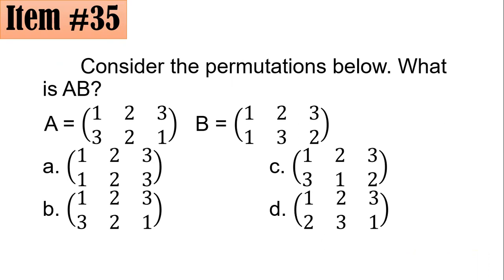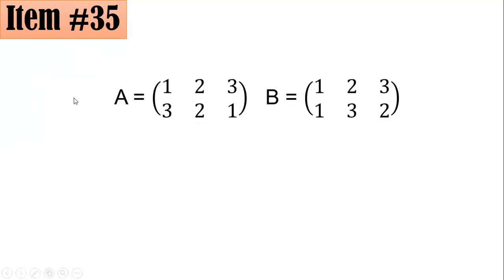So I have here 1, 2, 3 on top, and 3, 2, 1 at the bottom for A. This means 1 is mapped to 3, 2 is mapped to 2, and 3 is mapped to 1. For permutation B, 1 is mapped to 1, 2 is mapped to 3, and 3 is mapped to 2. So if we take A∘B, the product of A∘B, or the mapping composition, all we have to do is work from right to left.